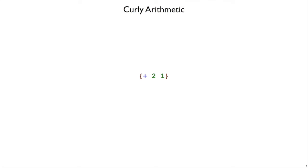For right now, CURLY is just going to have arithmetic expressions. So this, as you would expect, is going to be the CURLY program that adds 2 to 1, and so its value should be 3.